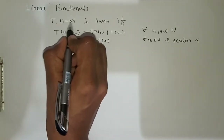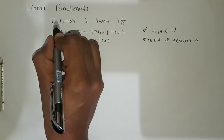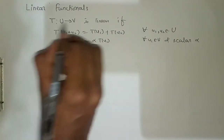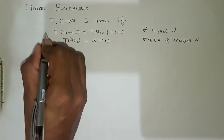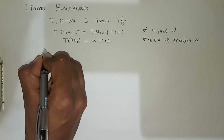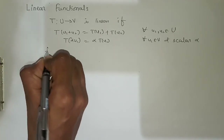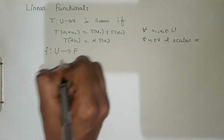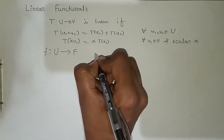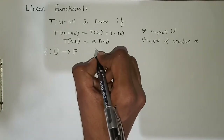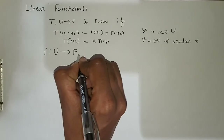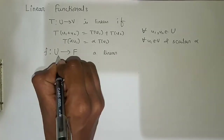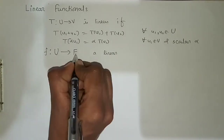Here U and V are both vector spaces, meaning T is a mapping from a vector space to a vector space. Now if this mapping remains the same but our domain and codomain change — that is, if we have any mapping from a vector space to a field — then we say that this is a linear functional.